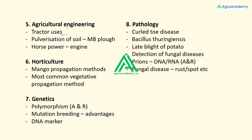There were questions on which implement is used for pulverization of soil, and implement-based questions overall. One question was related to horsepower — what it depends on — a factual-conceptual question. Most agri engineering questions were conceptual rather than purely factual. From horticulture, one question was on mango propagation methods and another asked about the most common vegetative propagation method. Horticulture was easy and engineering questions were also easy.